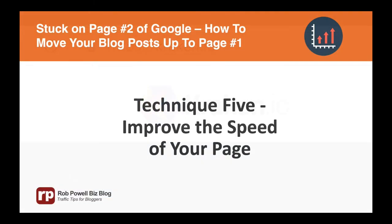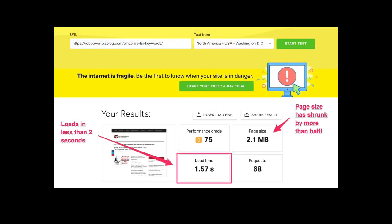Then go to the web page you're trying to optimize. Go to the top menu in Chrome and click Save Page As, or Command S on a Mac. All the image files for that page will be downloaded into a folder on your hard drive. Copy all the image files in that folder and paste them into a new folder. Next go to Kraken, upload all the images and shrink them. Then go to the published article and replace the existing images with the ones you just optimized on Kraken. Now go to Pingdom and do your speed test again. In my case, the page now loads in less than two seconds. Notice that the page size has shrunk by more than half.